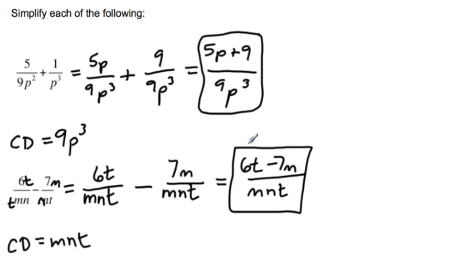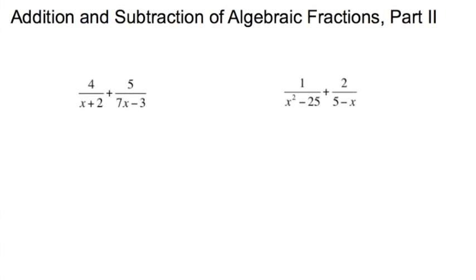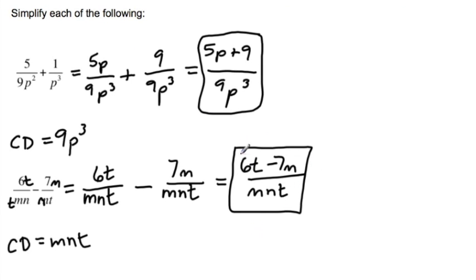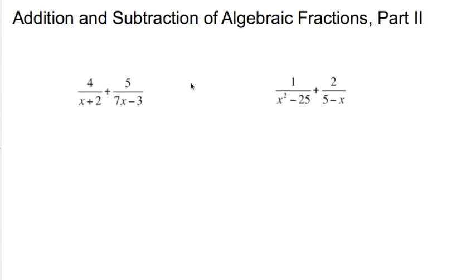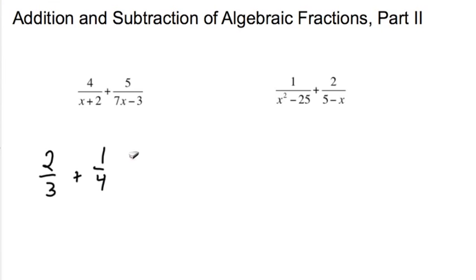That's all for now. Next time we're going to talk about adding and subtracting fractions that are a little more complicated. The problems get trickier, so we'll talk about other strategies as well. Usually if you have a fraction like two-thirds plus one-fourth, where three and four don't share a common factor, you multiply the numbers by themselves to get three times four equals twelve. We'll follow that same concept with algebraic fractions.